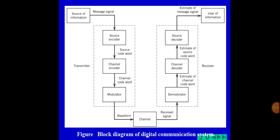In this session we will discuss about the digital communication block diagram. In the previous video we discussed about analog communication system and basic communication system. The first block in the diagram is the source of information. The function of the information source is to produce a required message which has to be transmitted. Examples of information are speech signal, video signal, etc.